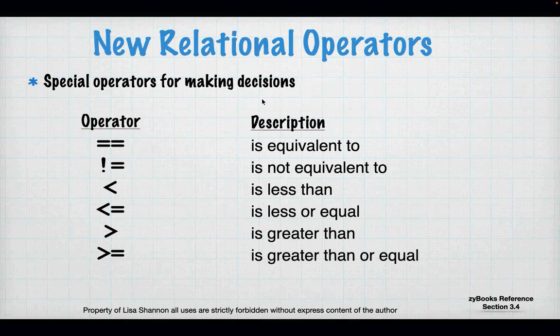The first operator is the double equal sign. The single equal sign is assignment; the double equal sign means 'equivalent' — is what's on the left equivalent to what's on the right? That is a comparison. Next is the exclamation point with an equal sign, which means 'not equal to' — the exclamation point reverses the outcome. Then we have less than, less than or equal to, greater than, and greater than or equal to — all the same comparators you use in math.